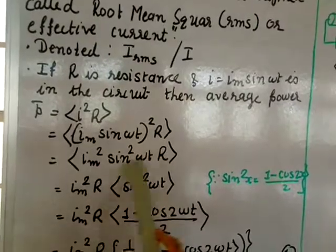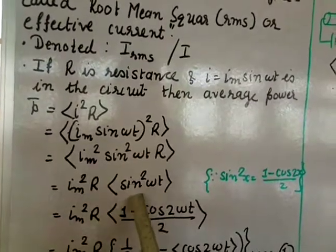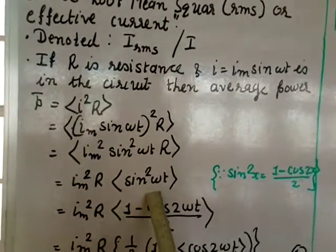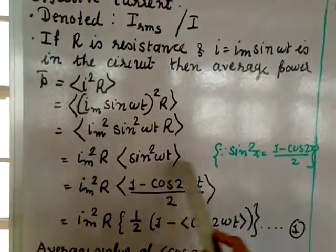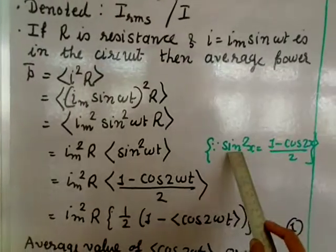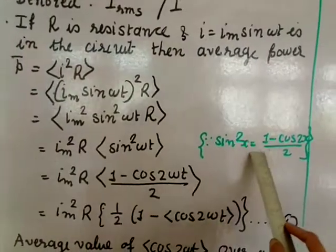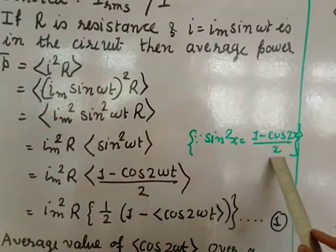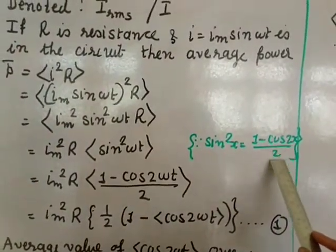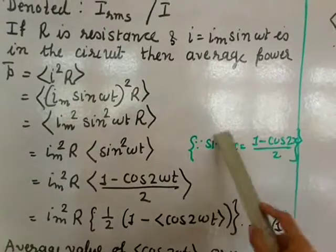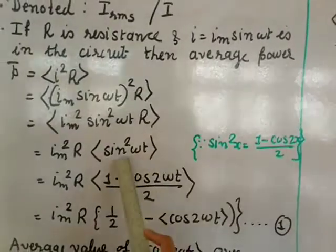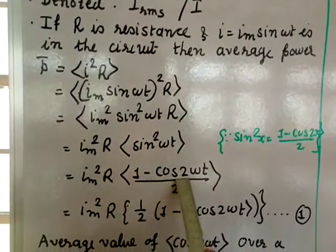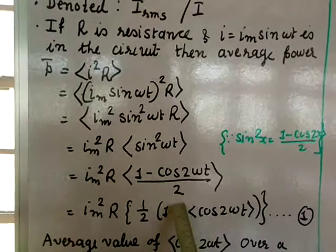We need to find the average of sin²(ωt). For that we use the trigonometric identity: sin²(x) = (1 − cos 2x) / 2. Applying this here, sin²(ωt) = (1 − cos 2ωt) / 2.